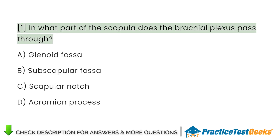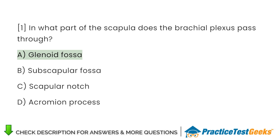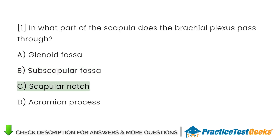In what part of the scapula does the brachial plexus pass through? A. Glenoid fossa. B. Subscapular fossa. C. Scapular notch. D. Acromion process.